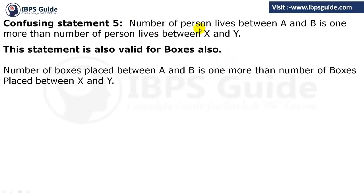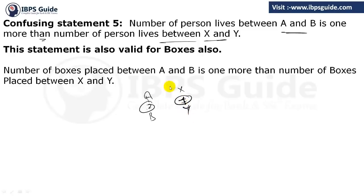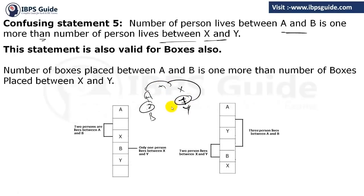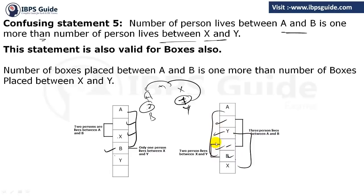The fifth confusing statement: the number of persons living between A and B is one more than the persons between X and Y. What this actually means: if between A and B we have two persons, then it must be one greater than between X and Y, so between X and Y there must be only one. Because between A and B is one more than the persons between X and Y. For example, if between X and Y there is only one person, then between A and B there are actually two persons — one more.